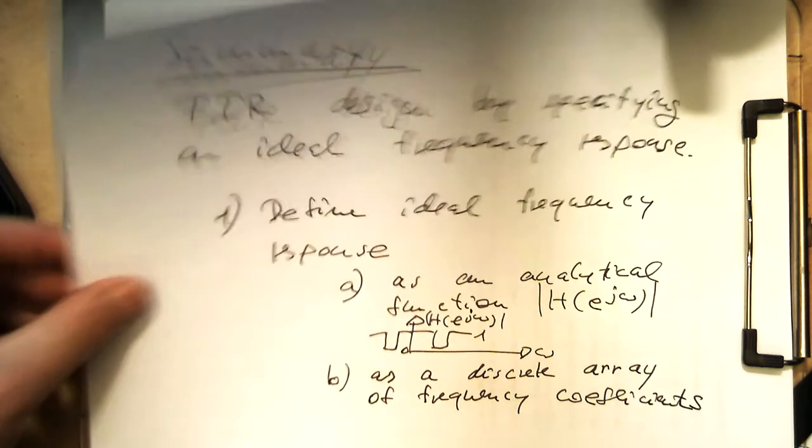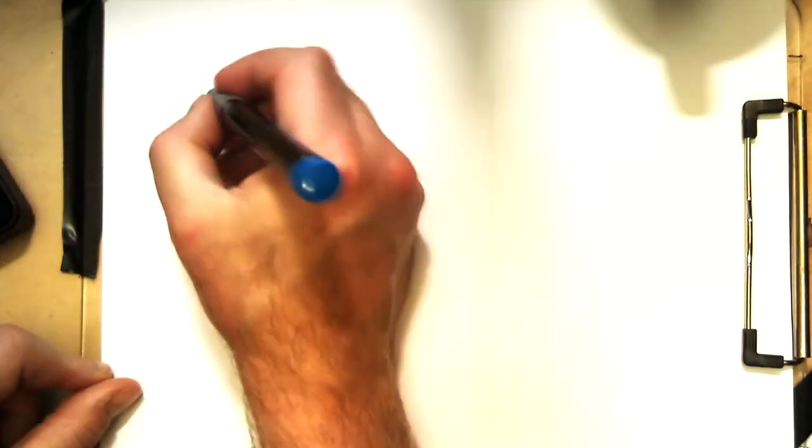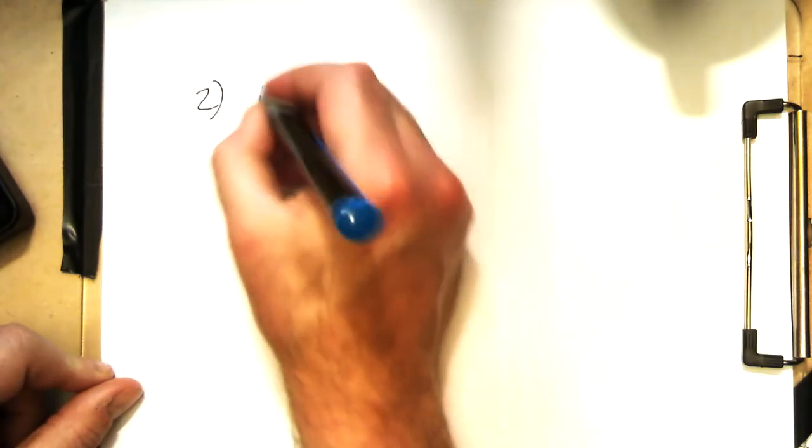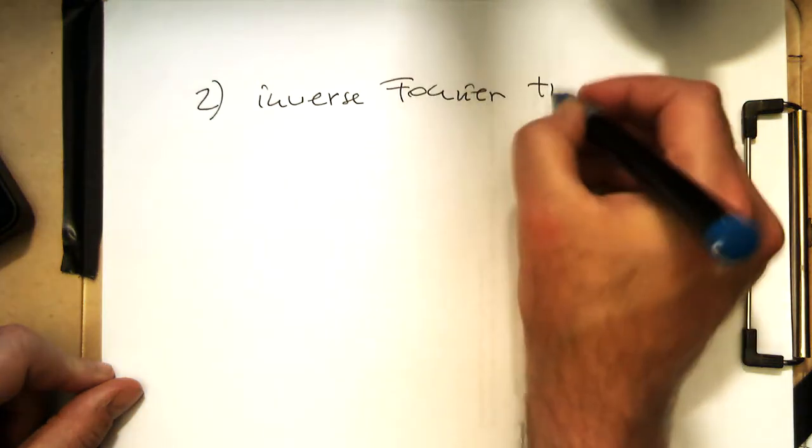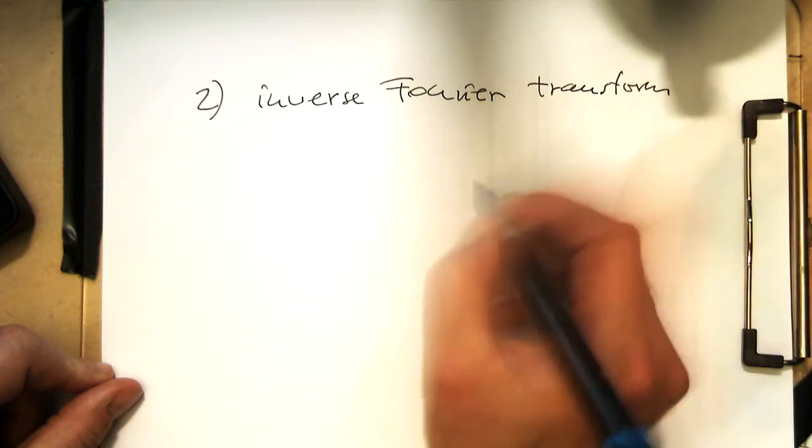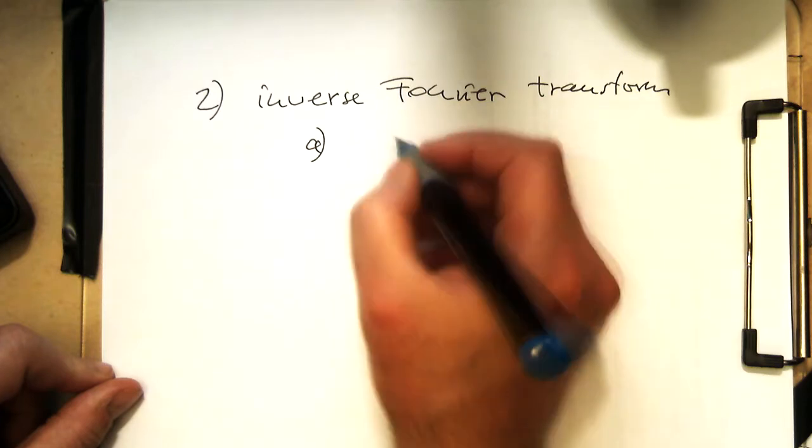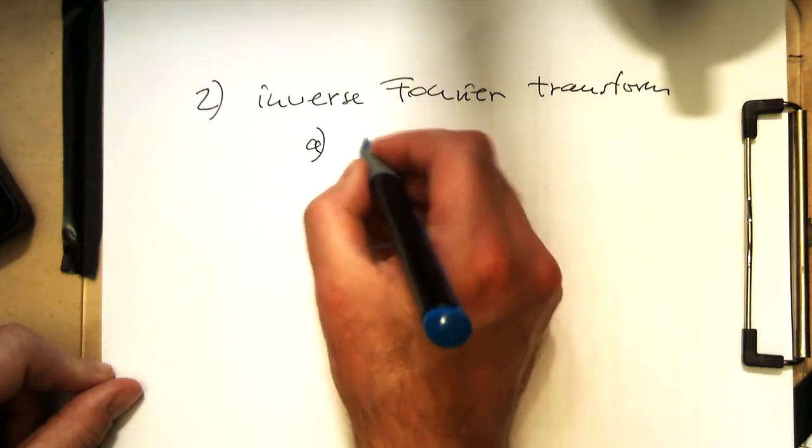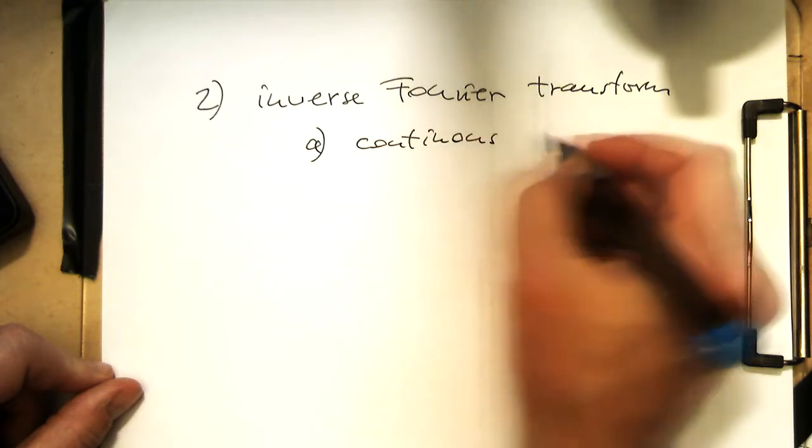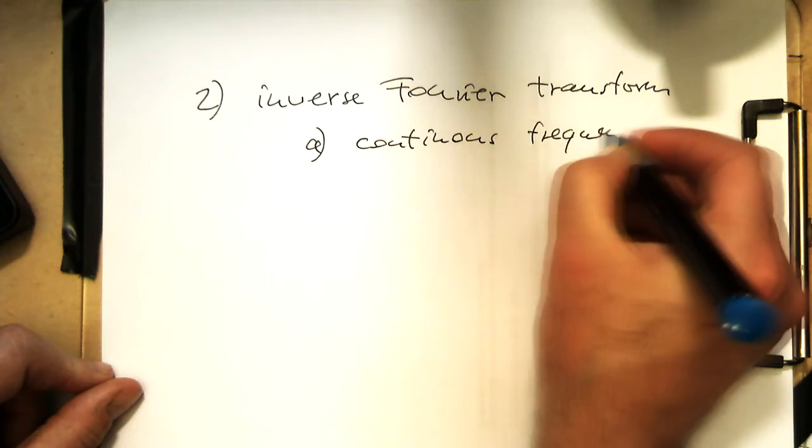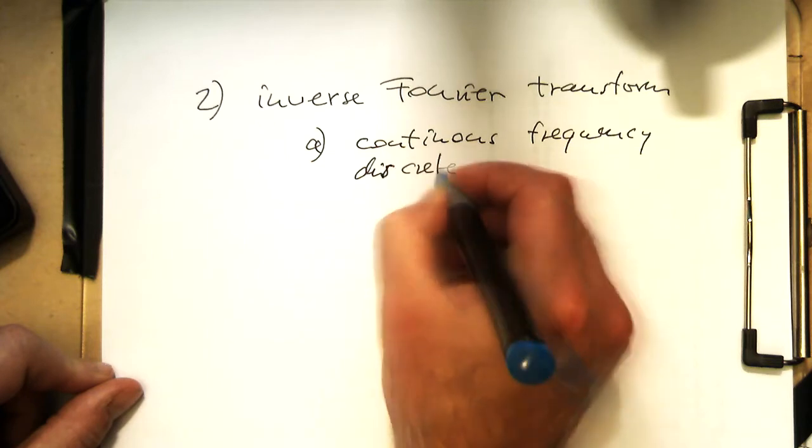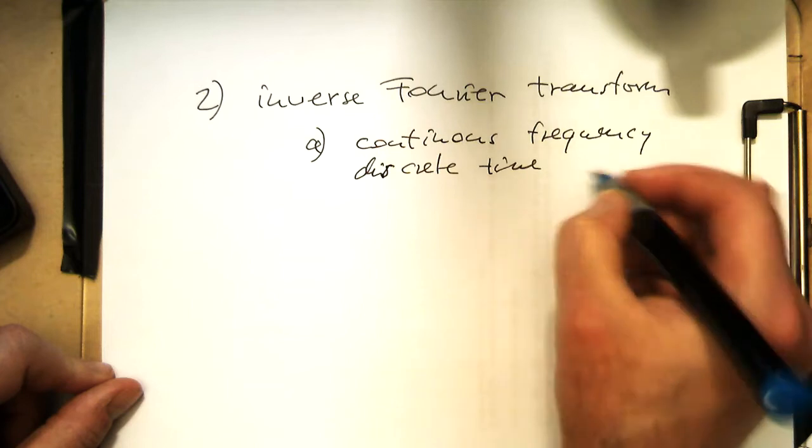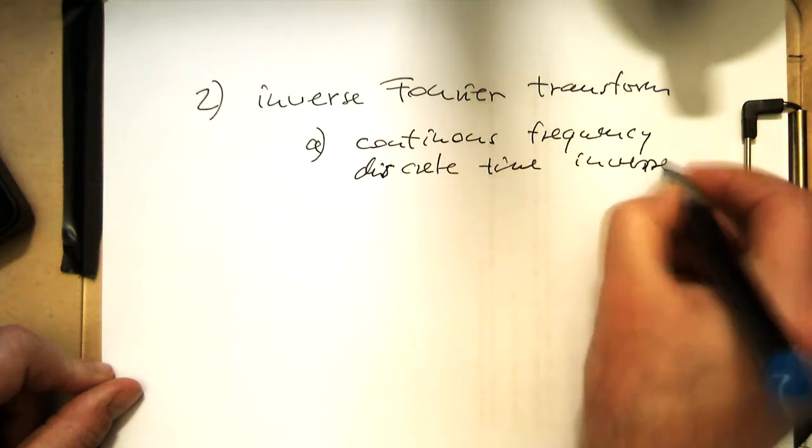And so once we've done this discrete array or the analytical one, then as a second step we do the inverse Fourier transform. So the continuous frequency discrete time inverse transform.